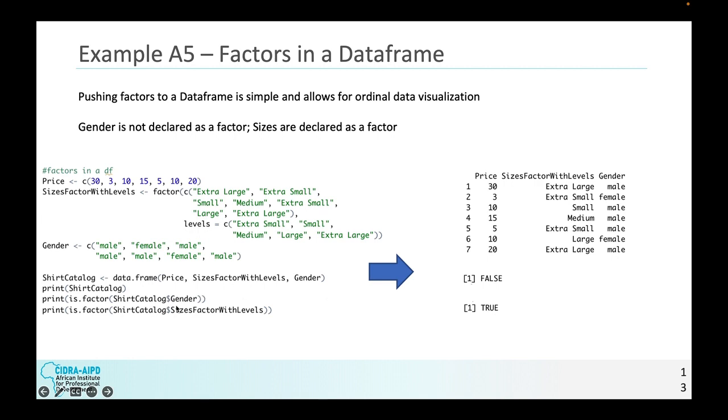Now we're going to see how each attribute in this data frame is declared. Is it a factor? So gender, is it a factor? When we declared gender, did we put the factor function in there? No. Therefore, when we say, is it a factor? We get false. If we put class, it would actually be a vector instead. But when we look at sizes factor with levels, it is a factor. This is really handy when you're dealing with a lot of different attributes and you just want to see real quickly at a glance, what's the data type? What can I do with it?